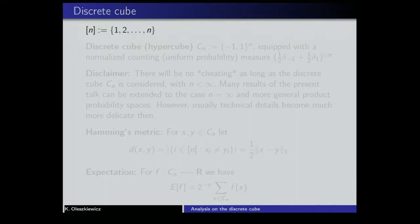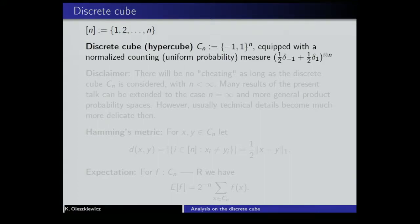Let's introduce the basic notation. By [n], I will denote the set of consecutive integers from 1 up to n. By discrete cube — sometimes called hypercube — we mean {-1, 1}^n. We equip it with a normalized counting measure, which is a probability measure. This is a product probability measure: we take the measure assigning probabilities 1/2 and 1/2 to both elements of {-1, 1}, and then take the product measure. This is the same as the Haar measure when viewing the cube as a compact group with pointwise multiplication.